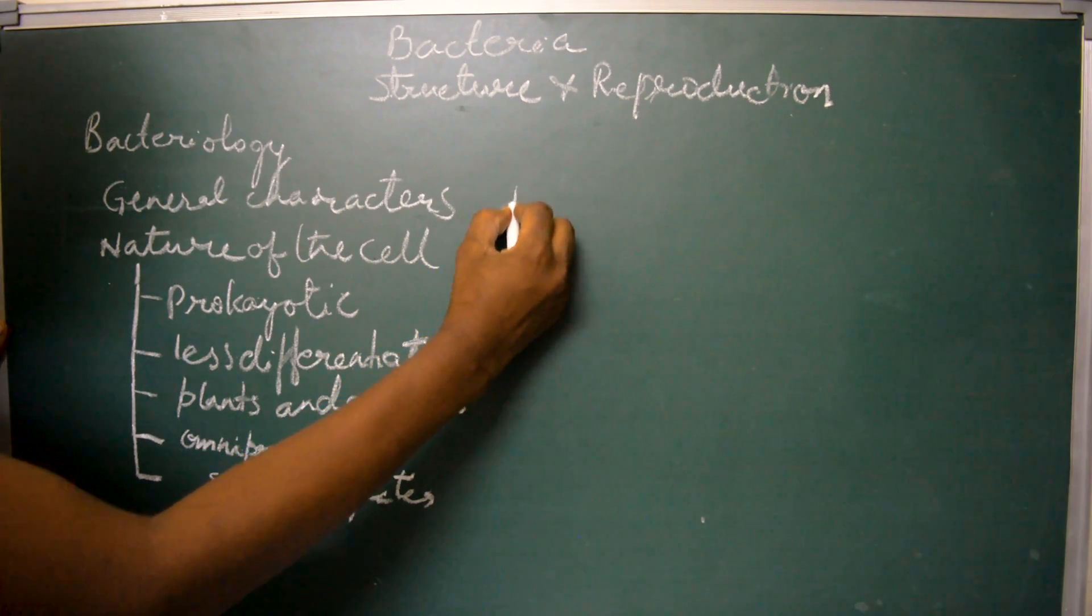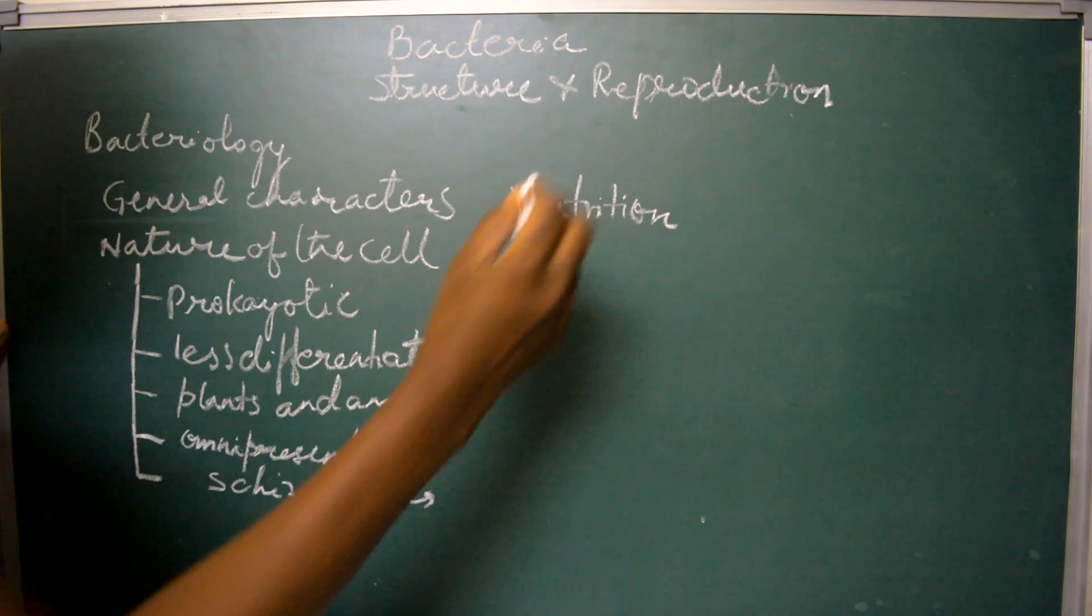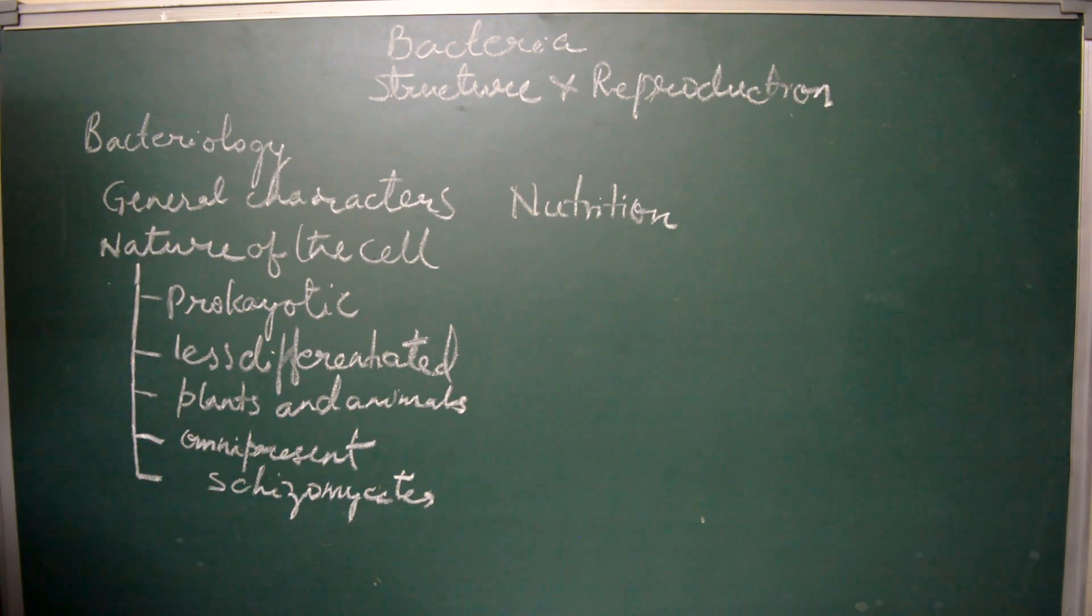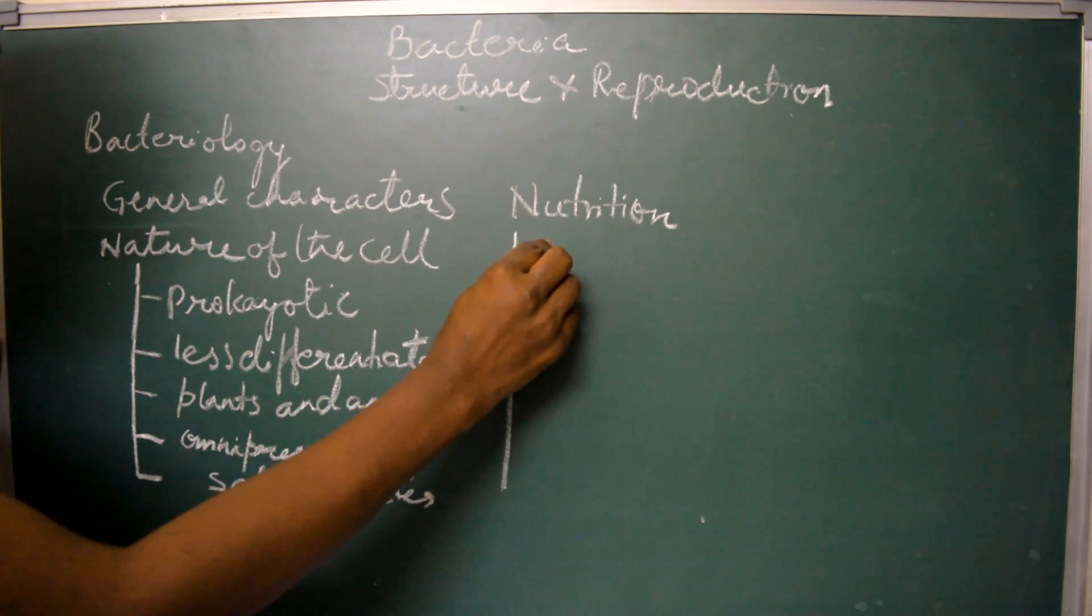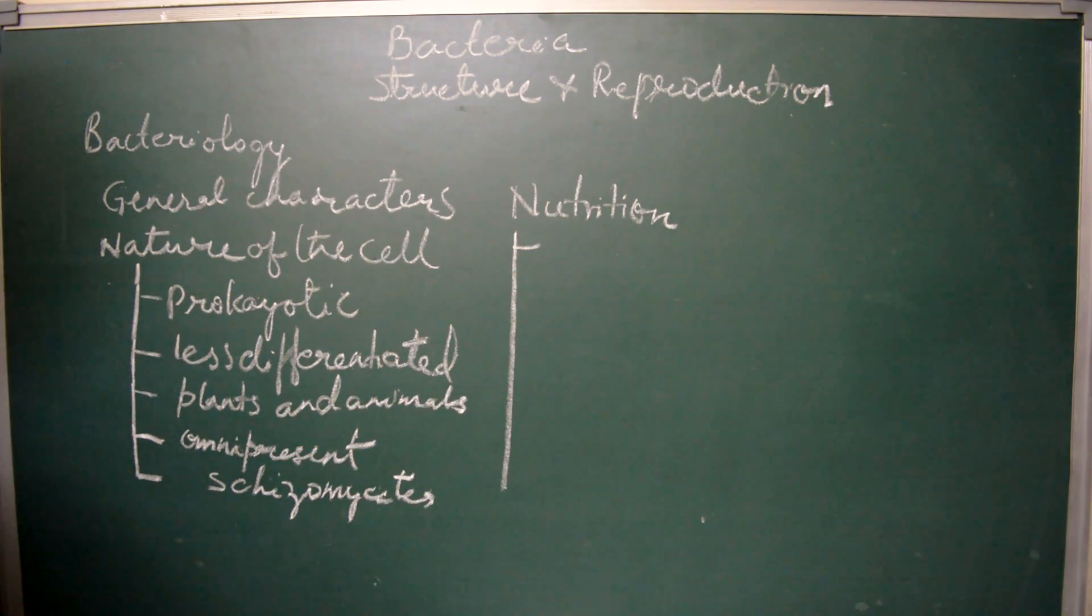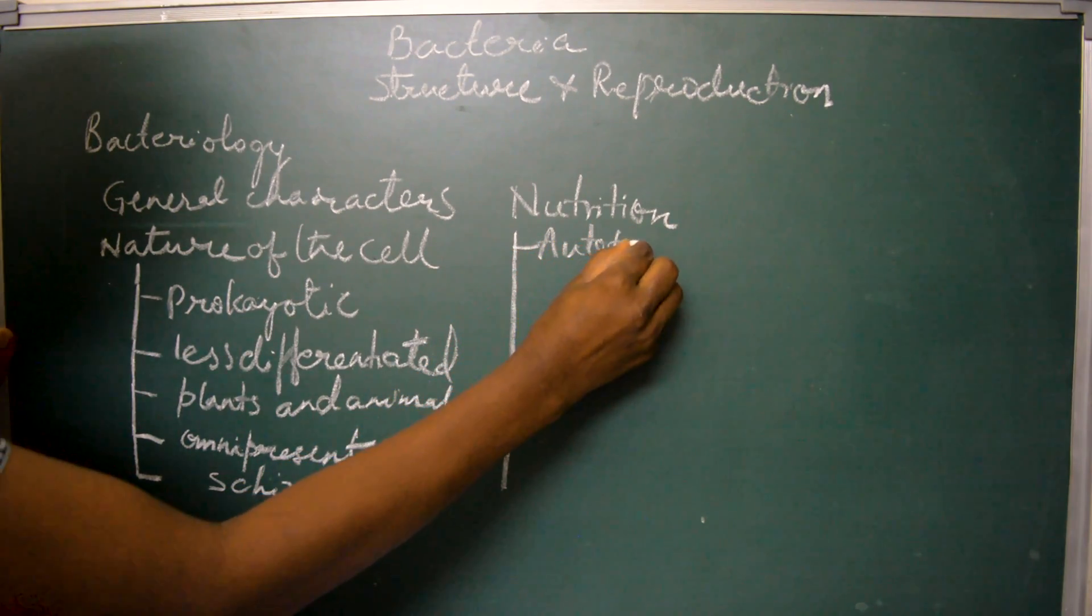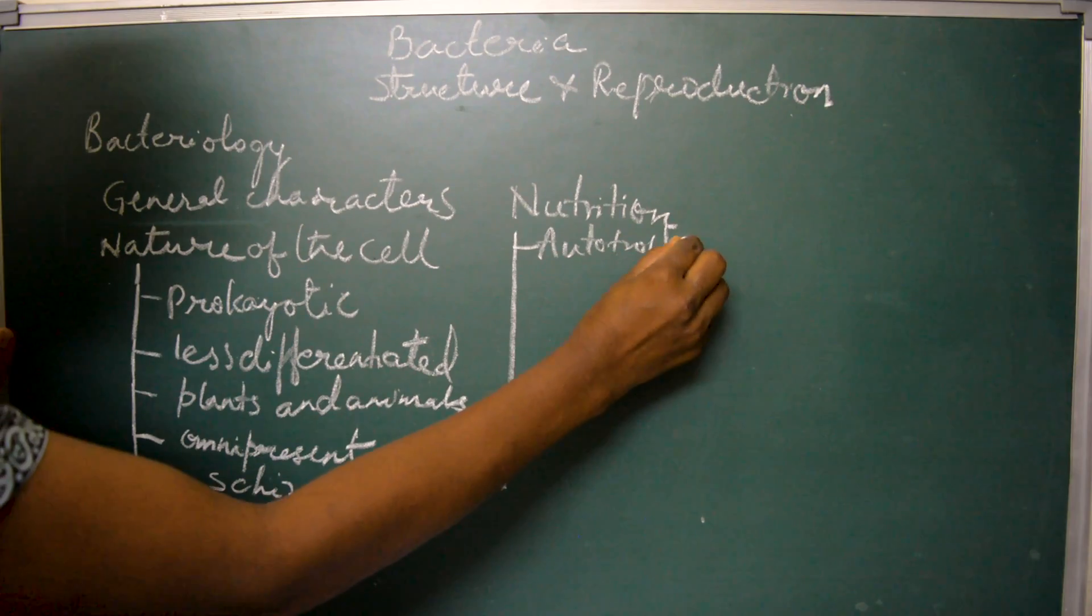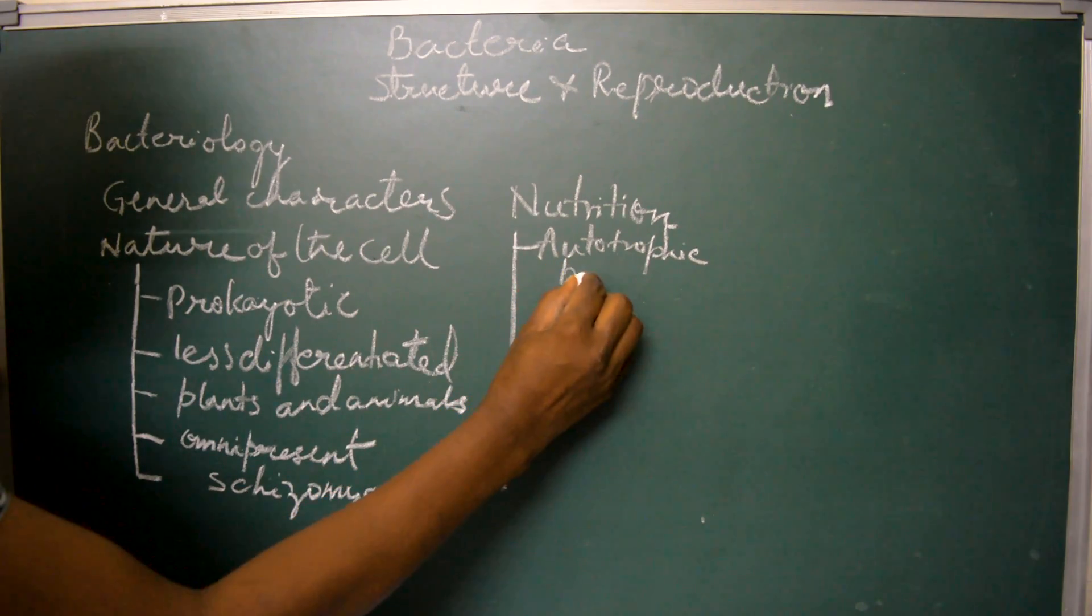Now let us discuss nutrition in bacteria. Bacteria shows a variety of nutritional types. The first type is autotrophic nutrition. The bacterial cells can synthesize their own food material using energy and they have a special chlorophyll called bacteriochlorophyll A.